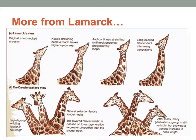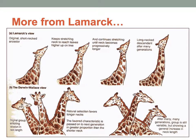Lamarck's idea was that giraffes got very long necks because they stretched their necks to reach food, and because they stretched them, the next generation would have a longer neck. Each generation would keep stretching to get more food, so over time giraffes ended up with much longer necks. He also believed that if you didn't use a trait because it didn't benefit you, eventually it would no longer be present in the species — that was the idea of use and disuse.